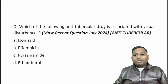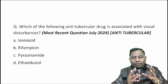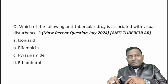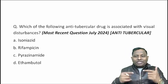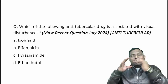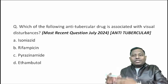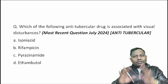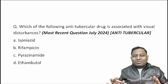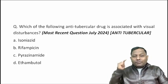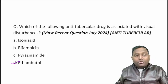The question asks: which of the following anti-tubercular drugs is associated with visual disturbances? It could be a direct recall question or a two-line clinical scenario where a TB patient was given a first-line drug and then developed a problem. Either way, the answer is the same — the anti-tubercular drug causing visual disturbances is ethambutol.